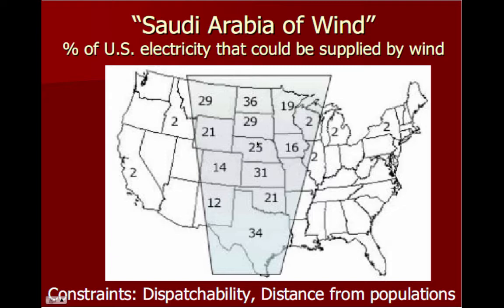They call this Midwest tier of states the Saudi Arabia of wind, because the output potential of this area could supply electrical demand many times over — more than the output of oil from Saudi Arabia in a year. And of course that's going to run out and the wind isn't.